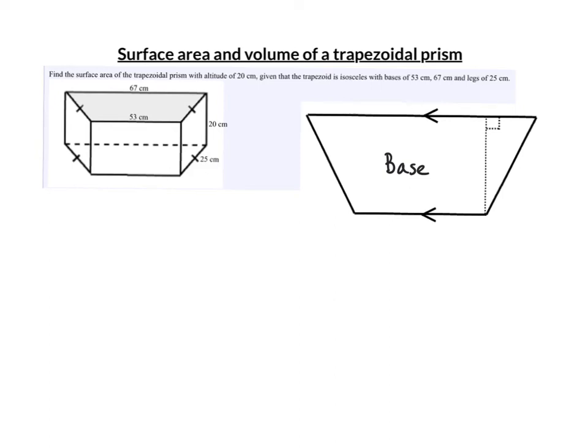Let's find the surface area and volume of a trapezoidal prism. The base of this prism is a trapezoid and it's isosceles. Notice the two equal marks that identify the equal legs.